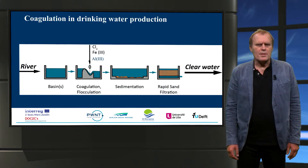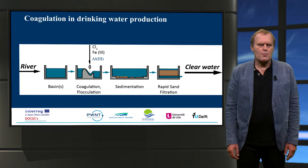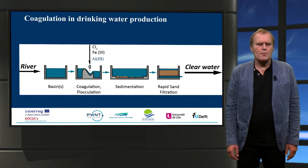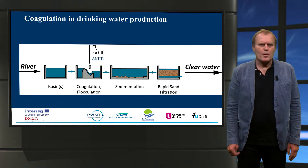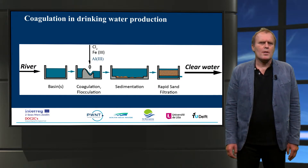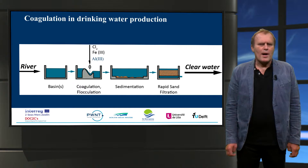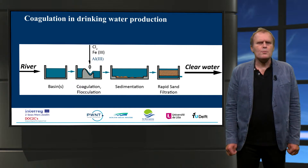Coagulation is in fact the workhorse of conventional surface water treatment. It is used as the first step in the treatment train. After coagulation and flocculation, the flocs are allowed to settle. Finally, the small flocs are removed with rapid sand filtration.